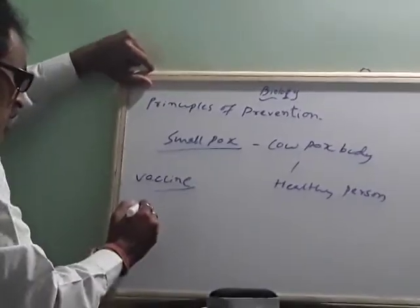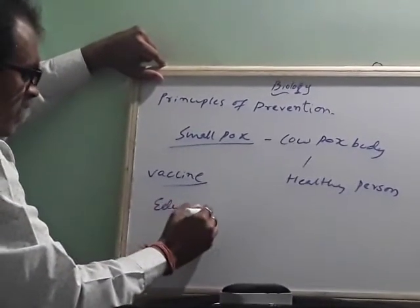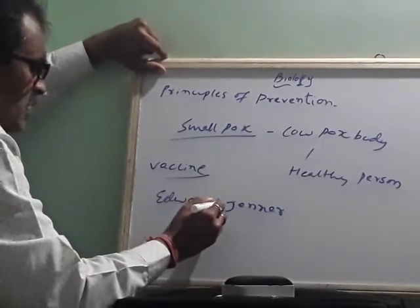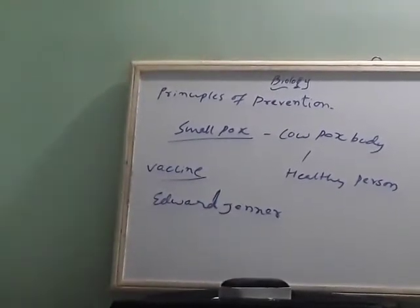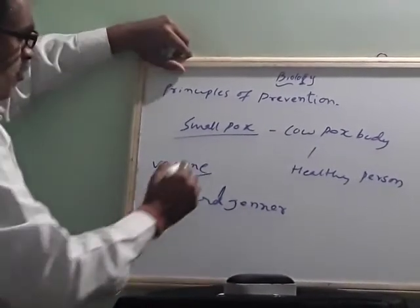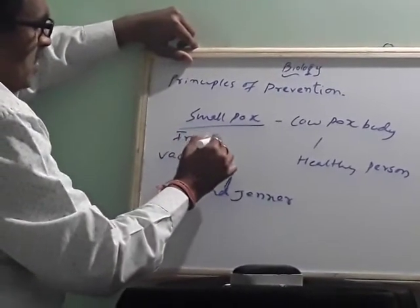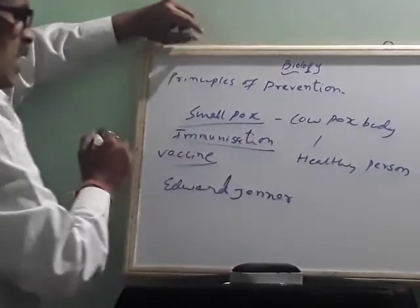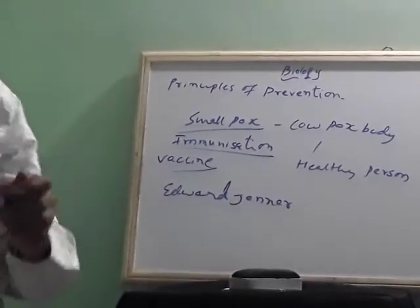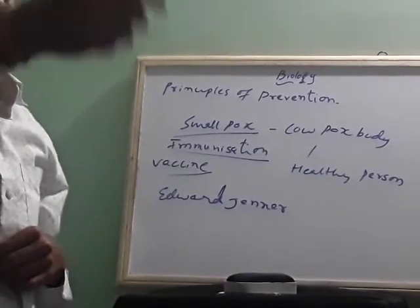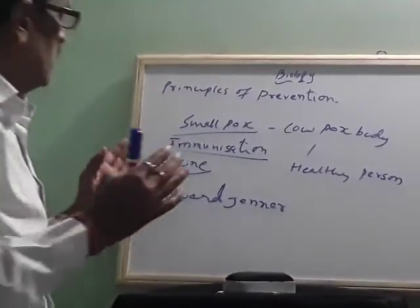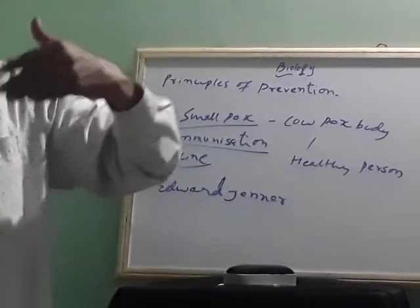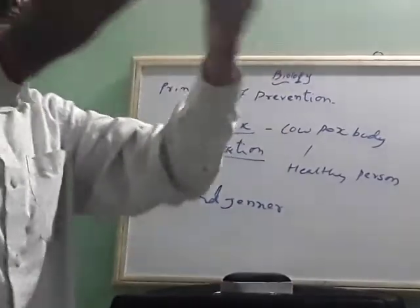There was a scientist called Edward Jenner who prepared vaccines. He started a program called immunization. Whatever diseases may affect you in your future life, these immunizations are given earlier, before the age of five, to safeguard the person.